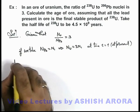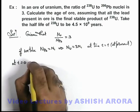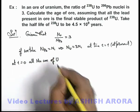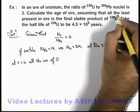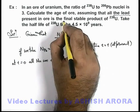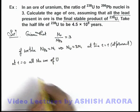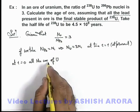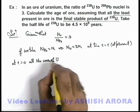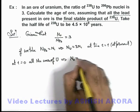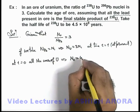At t equal to 0, all nuclei were of uranium. This is already given here that all the lead present in the ore is the final stable product of uranium-238. So at t equal to 0, all nuclei were of uranium. This implies the initial total number of nuclei would be the sum of the two, that will be 4N1.